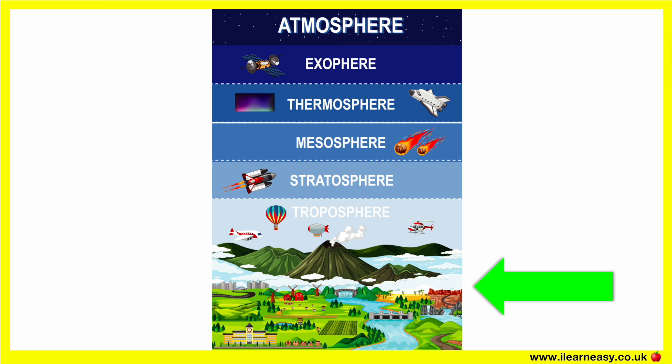The troposphere is the lowest atmospheric layer. It extends from the Earth's surface to about 10 to 12 miles in height. This layer contains all the air that plants need for photosynthesis and that animals need to breathe. The troposphere also contains about 99% of all water vapour and aerosols. Most of the Earth's weather happens in this layer, and almost all clouds generated by weather are found in the troposphere.